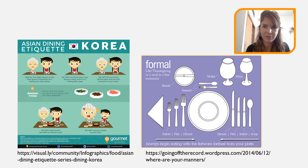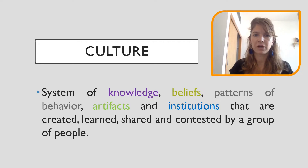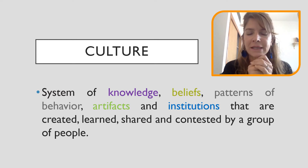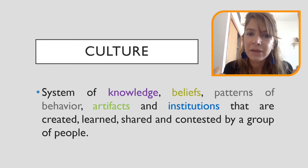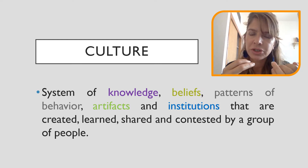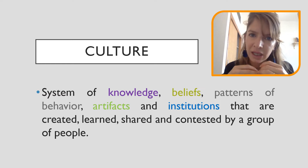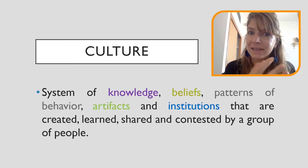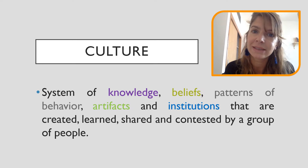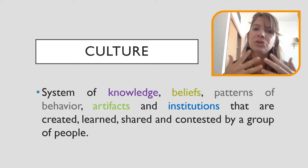Now that we've discussed this example, let's try to define what culture means. Culture is a system of knowledge — things that we know about something. It also involves beliefs that we share with people, and those beliefs and knowledge lead us to behave in certain ways — patterns of behavior. We also have specific artifacts attached to culture, like spoons, knives, forks, and glasses, which are directly related to our culture. And then there are institutions.